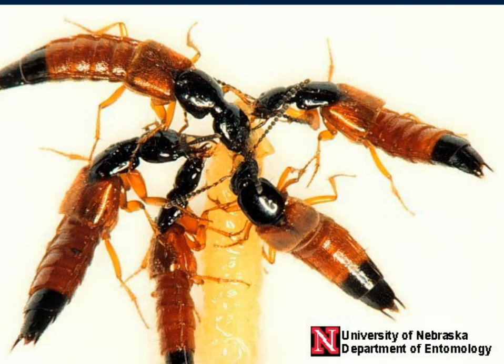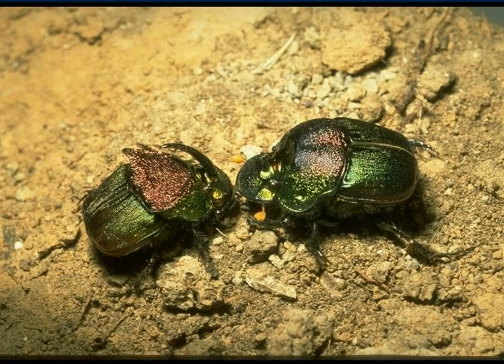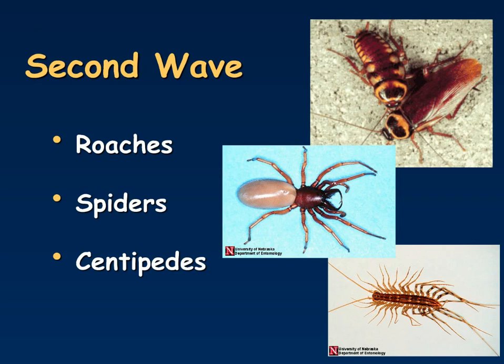In addition to beetles helping in the decomposition process, you're also going to have some different predators that may come to the body. In particular, rove beetles, which feed on maggots that may still be present. So you will have some insects helping with decomposition and others that are scavengers or predators feeding on other remains. Dung beetles may also show up at this stage. During the second wave you can also see other insects like roaches that are scavengers, or other arthropods such as spiders and centipedes that are predators.